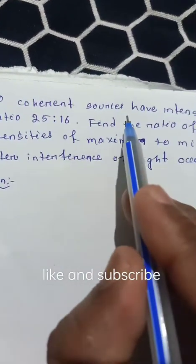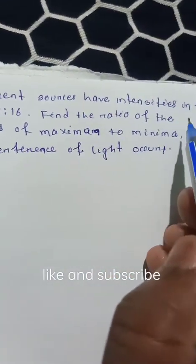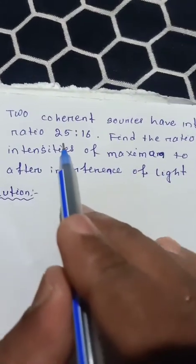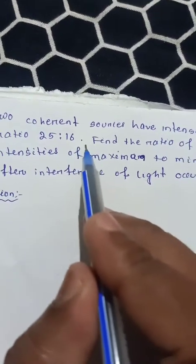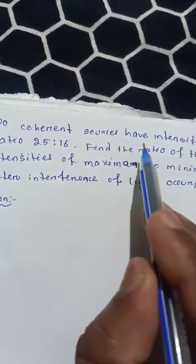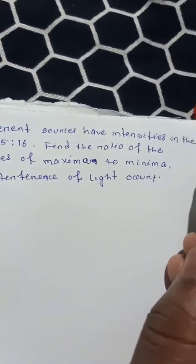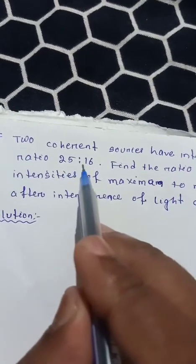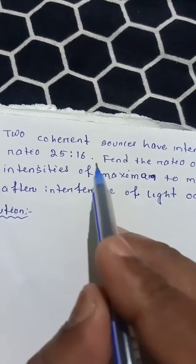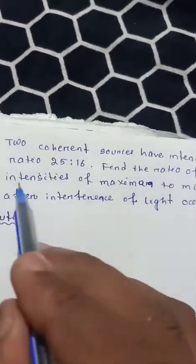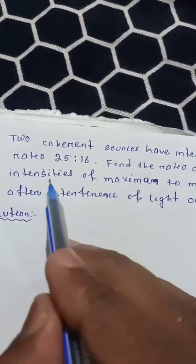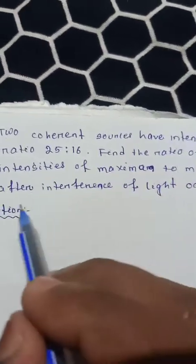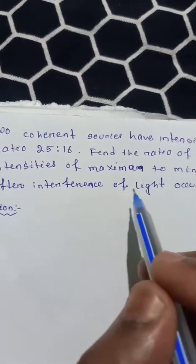Two coherent sources have intensities in the ratio 25 to 16. Find the ratio of the intensities of maximum to minimum after interference of light occurs.